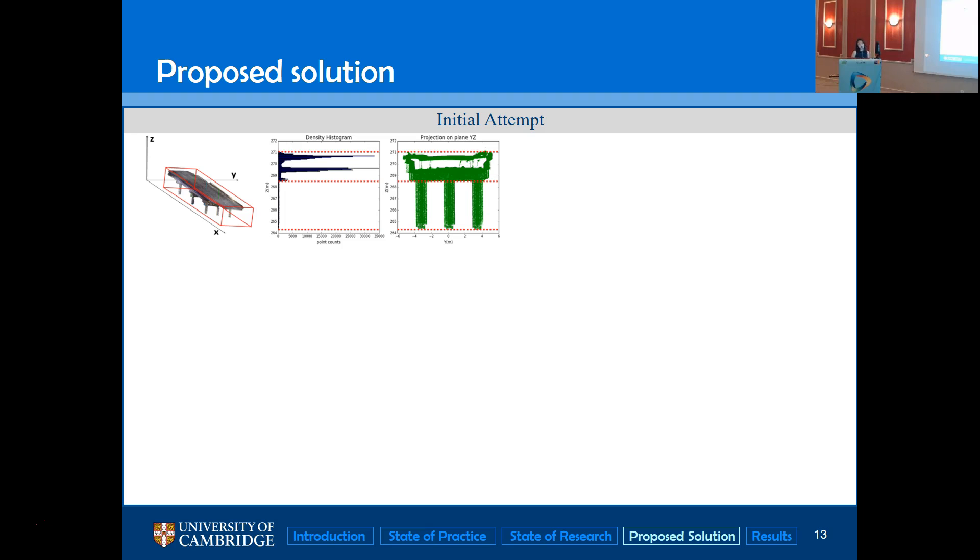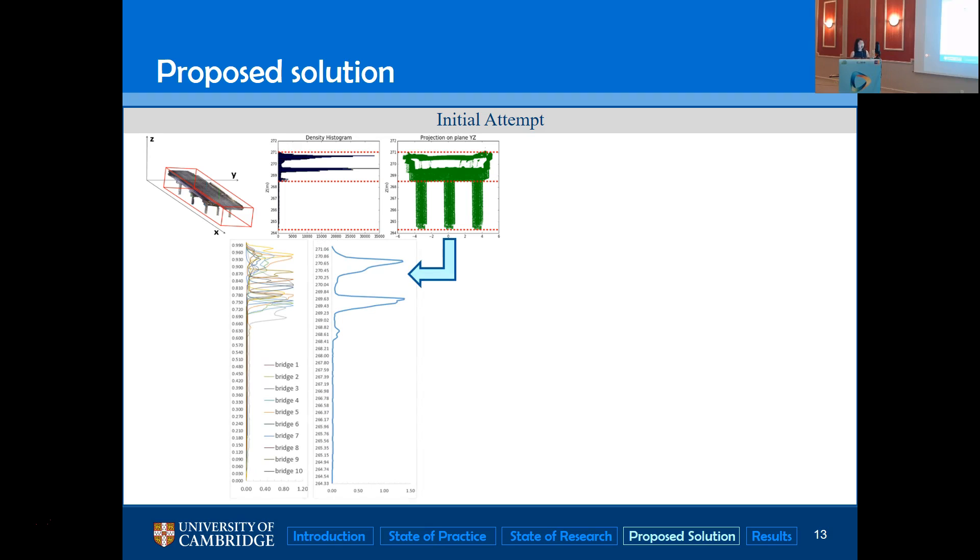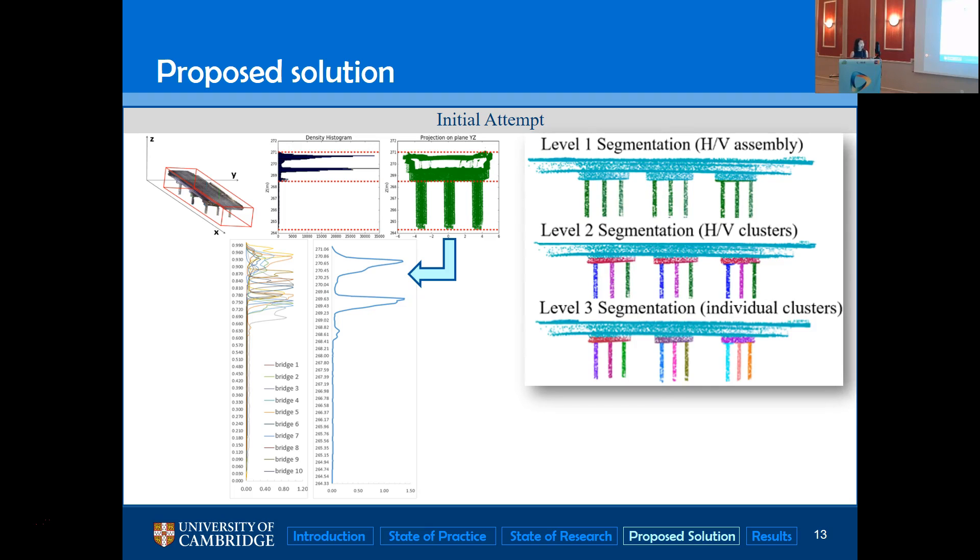Here comes our initial attempt. We follow a top-down strategy and we propose a projection histogram method by generating the kernel density estimation curve. And by the way we use peak features to segment the entire bridge into three levels. And you can see that we tested it on five real-world bridges and can efficiently segment it into point clusters. However, we identified some limitations of this method.